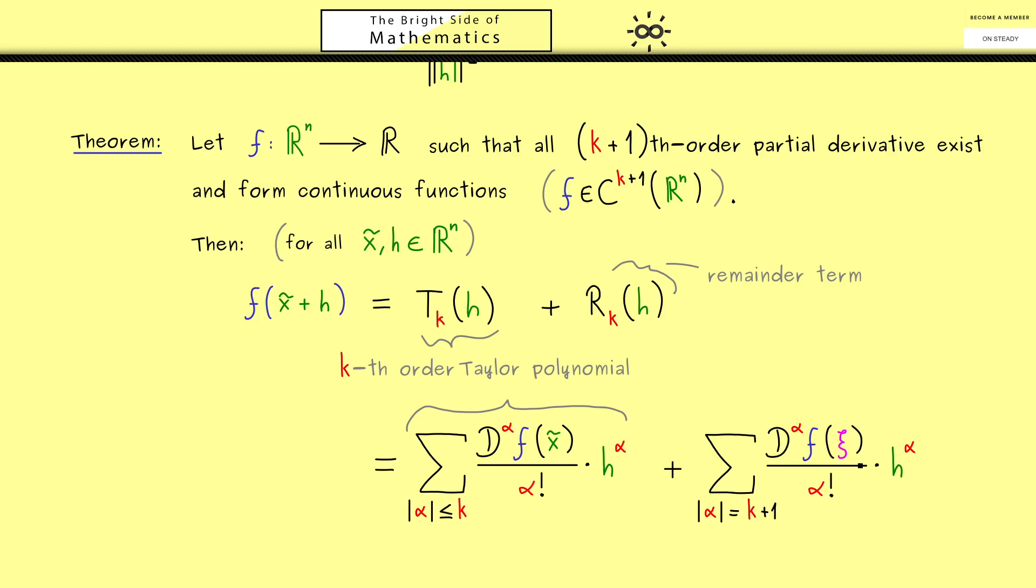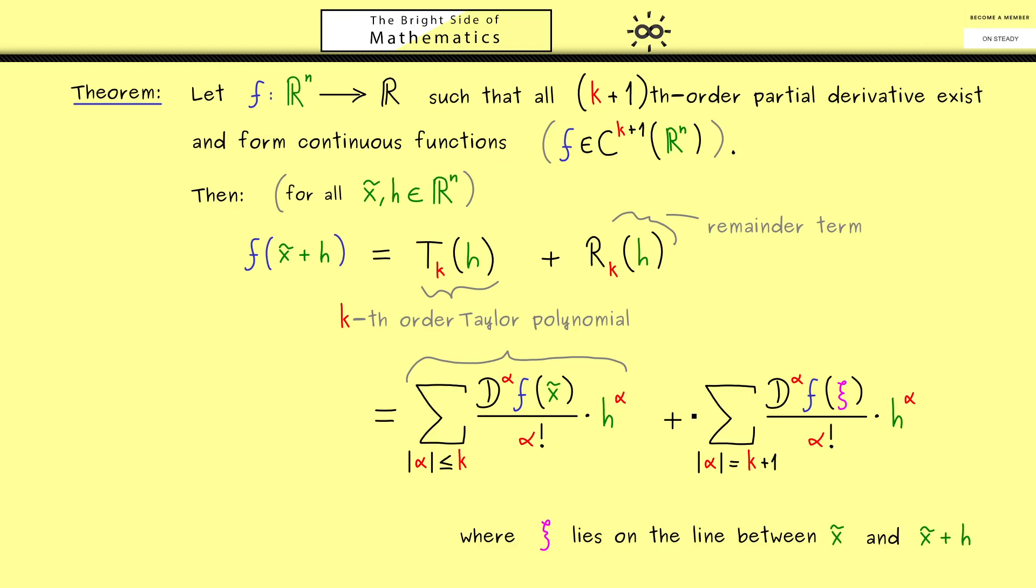Now, I said it's an intermediate point, which means it should lie between x tilde and x tilde plus h. And now in this higher dimensional case, it simply means that ξ lies on the line between x tilde and x tilde plus h. This is not hard to visualize, because both things are just points in R^n, and of course we can connect them with a line. Indeed, this line should be given by the vector h. And now we can conclude here, that ξ is just one vector on this line. And exactly this property makes it an intermediate point.